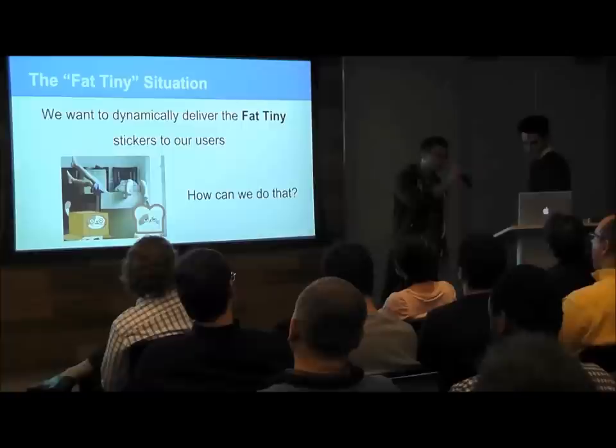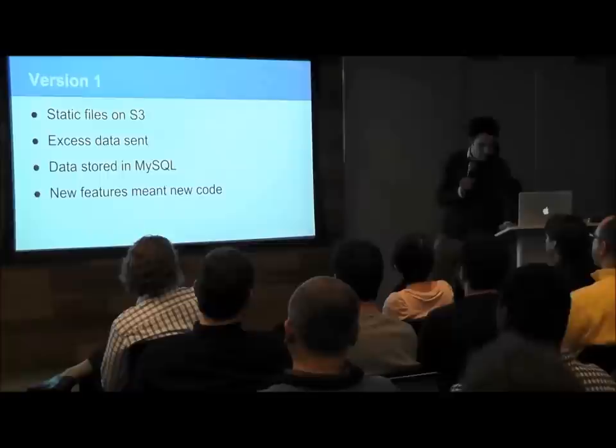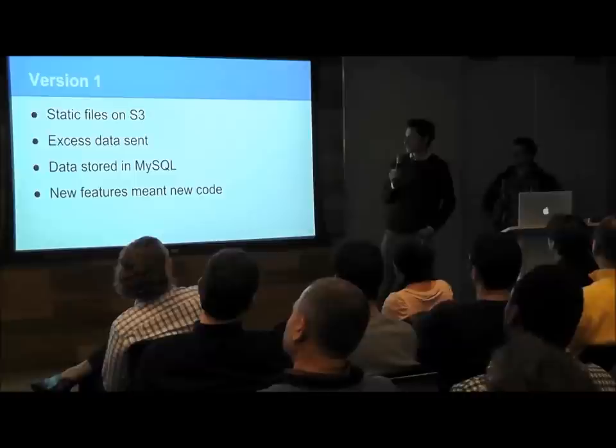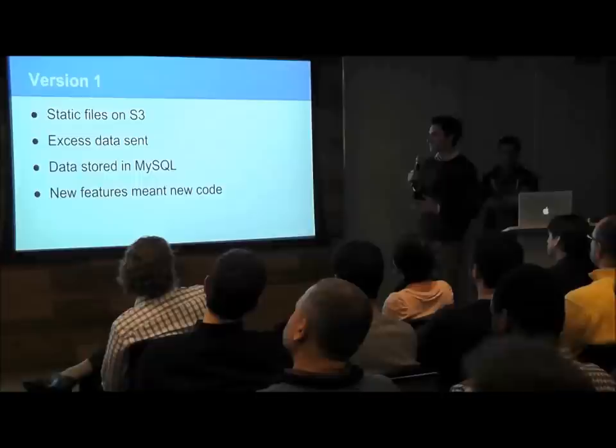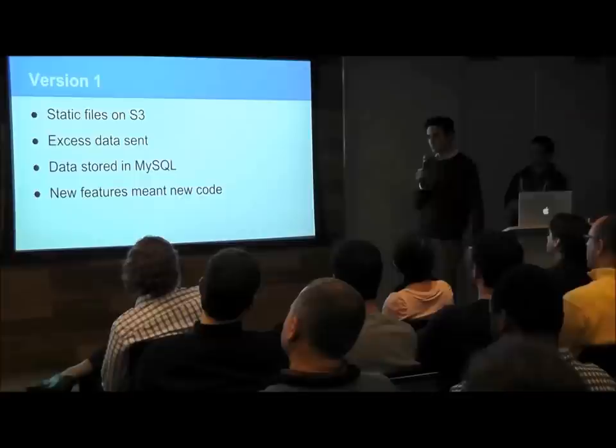In order to solve the Fat Tiny situation, we created something called a content delivery system — we refer to it as a CDS. The initial version allowed us to deliver content from our servers. We had to pre-compute everything and put it in static files hosted on S3, which is Amazon's block storage, so it was a very inflexible system — everything had to be figured out in advance.